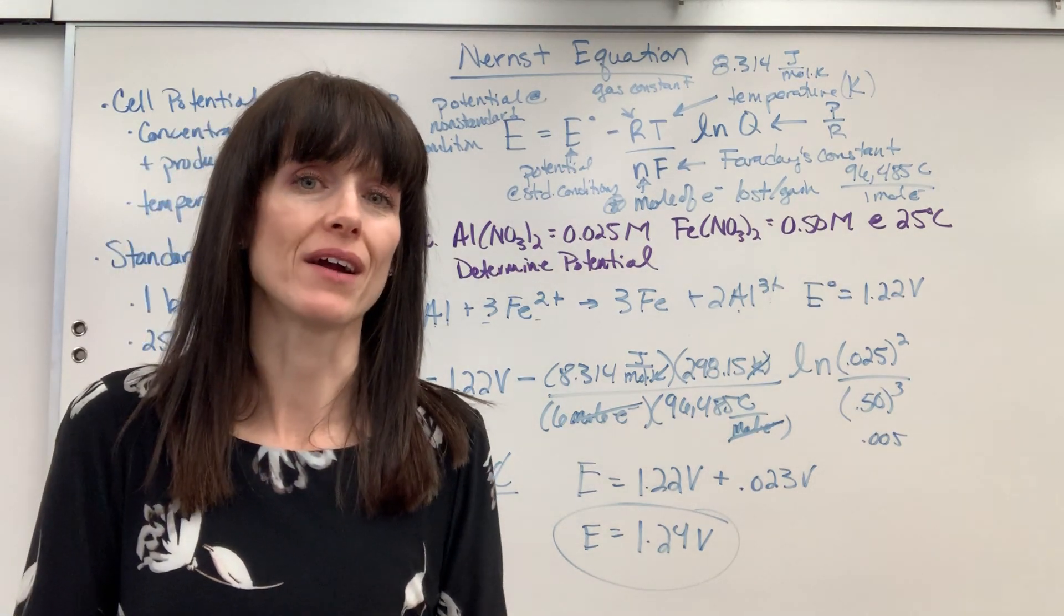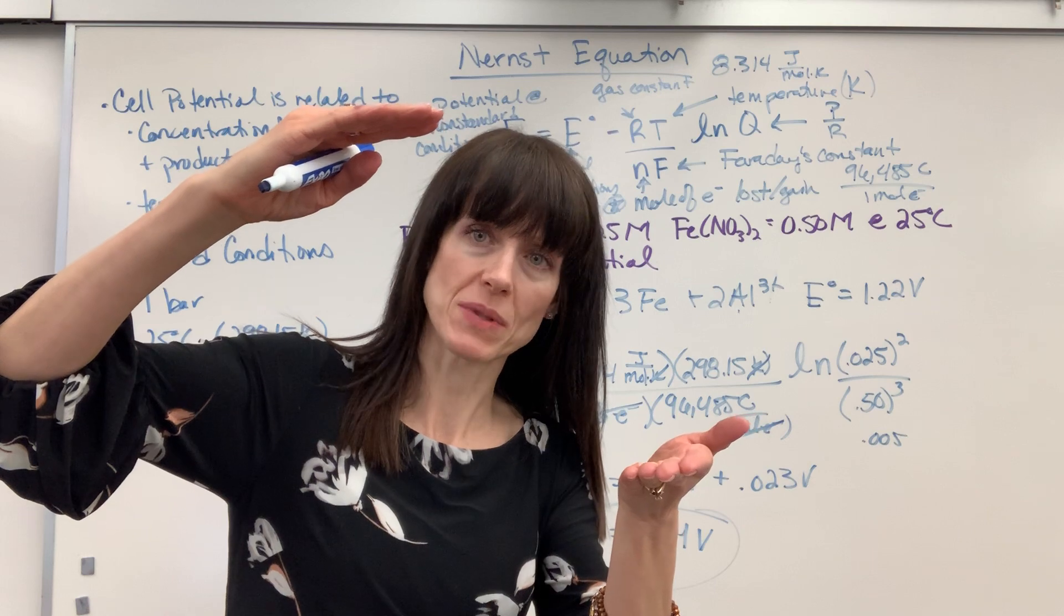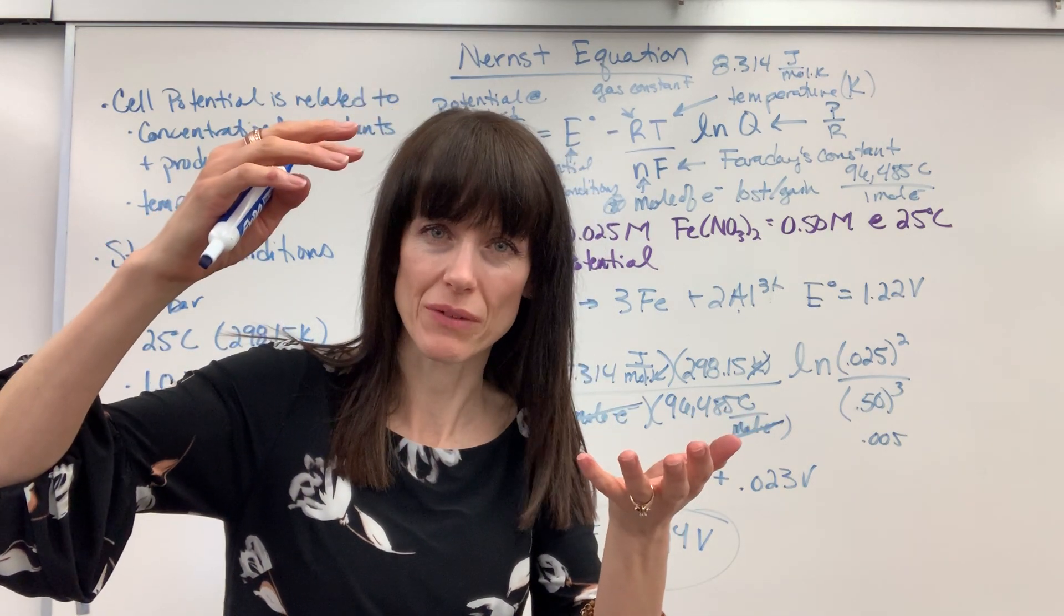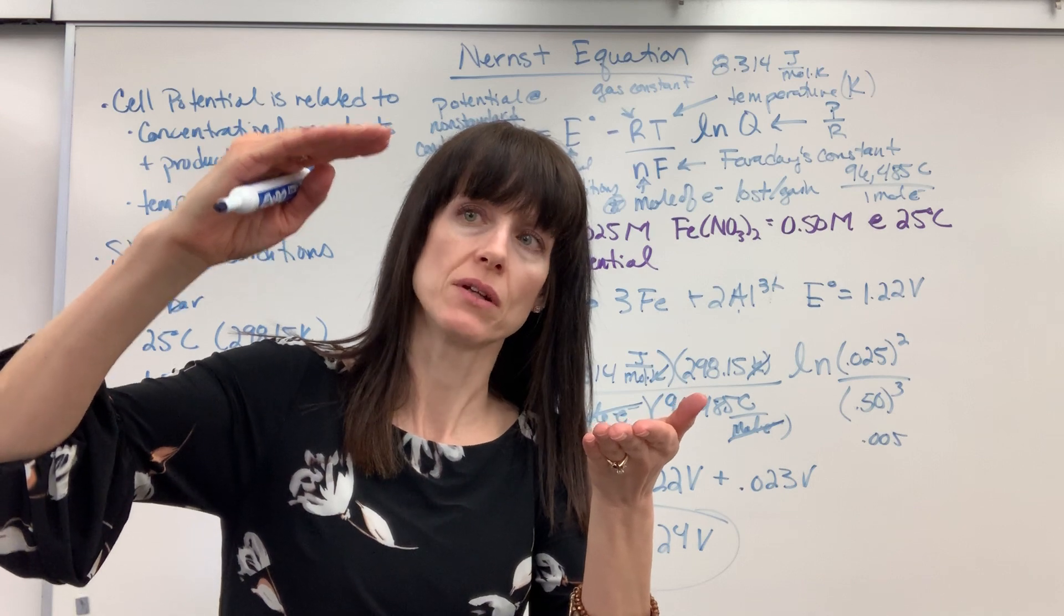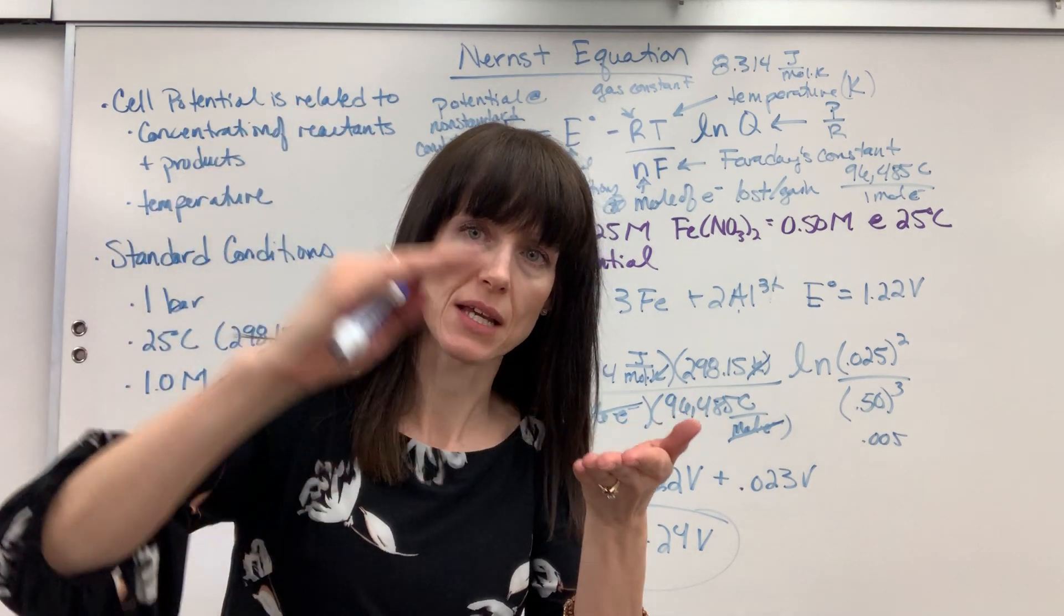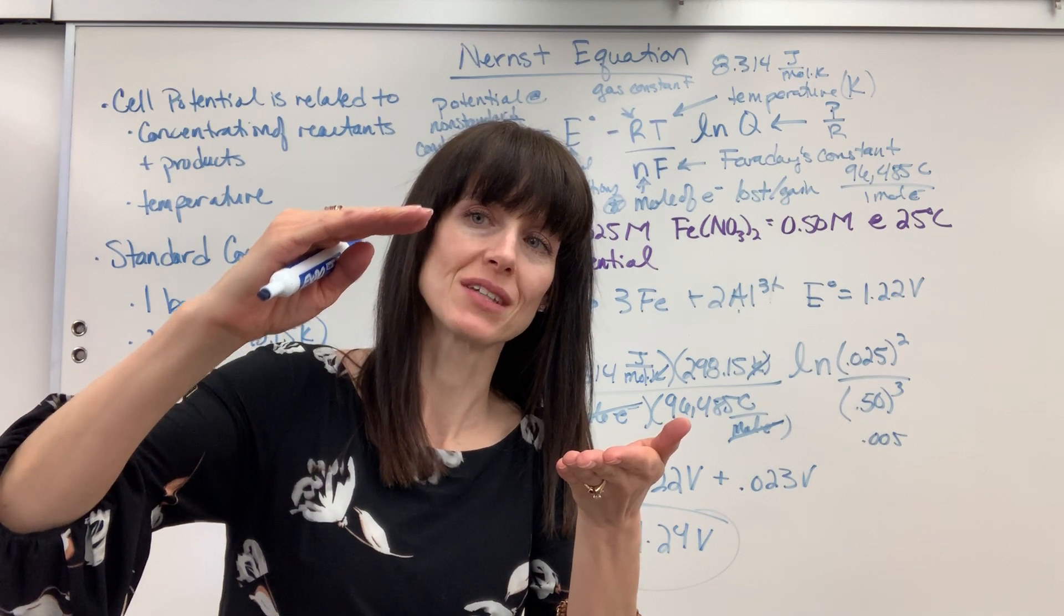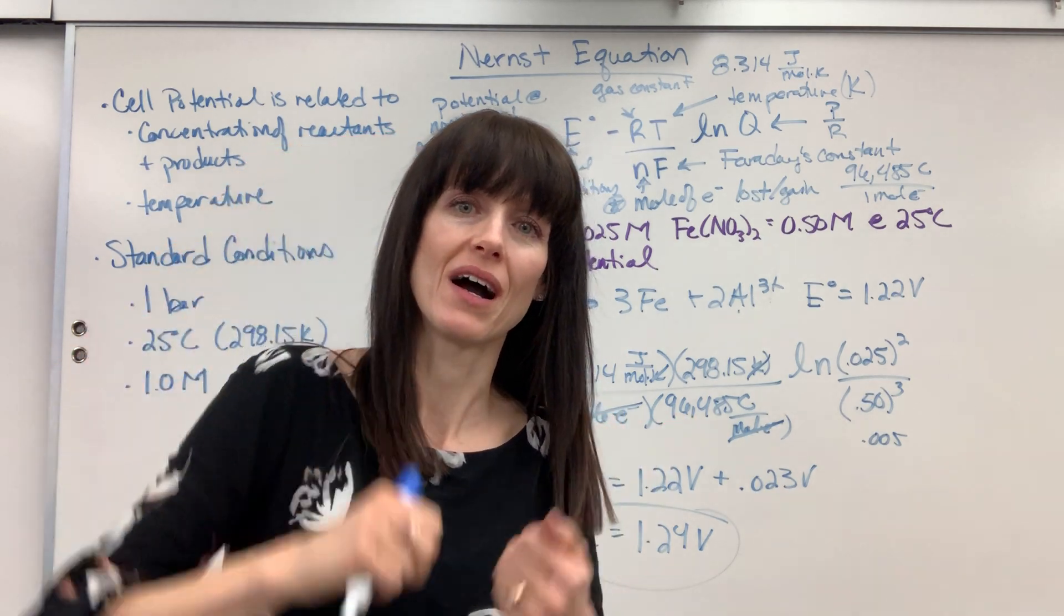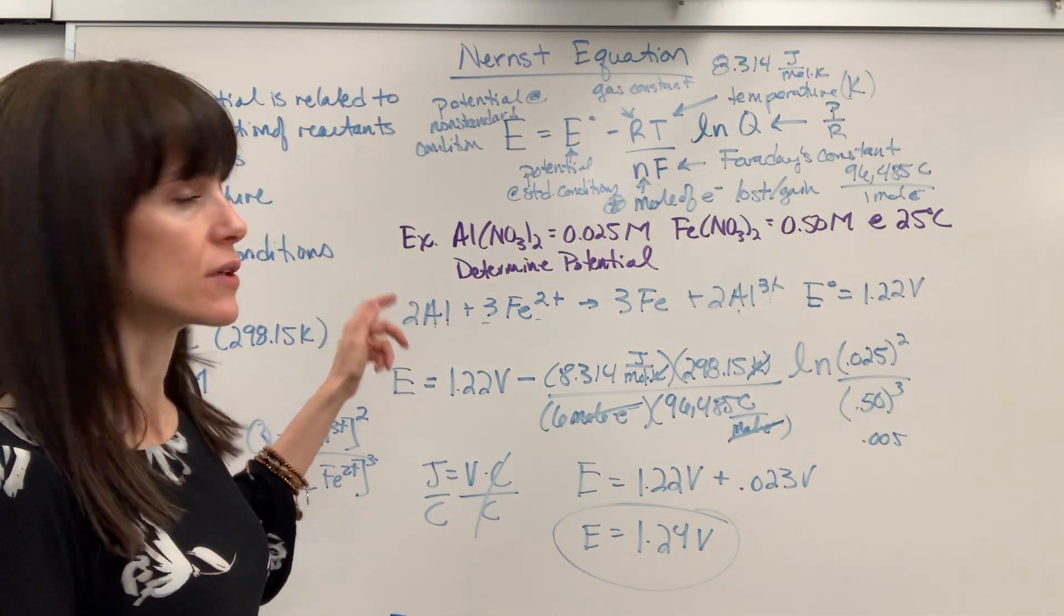So the voltage is actually a little bit higher. Kind of interesting. At standard conditions, here's my potential. Remember, I use the river example. Here's my potential. Top of the mountain, bottom of the mountain, the potential pushes electrons down. Well, at these particular non-standard conditions, the potential's higher. It's a little bit higher. It's the 1.24. So that is how you use the Nernst equation.